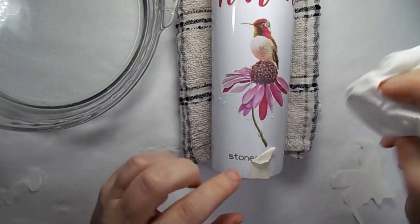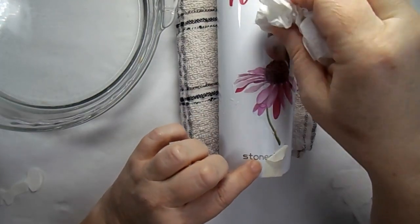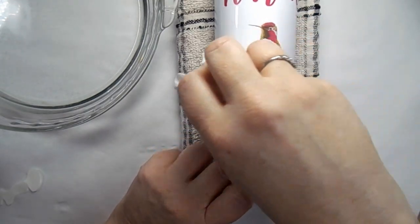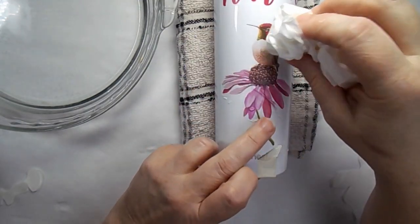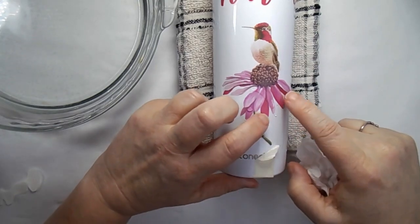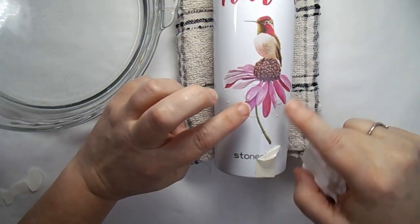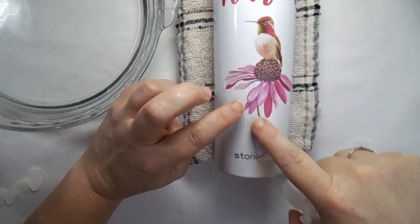I'm just going to peel that back and we're going to get this hummingbird in place. Keep kind of moving it around. You don't want too much film left. I cut around it nice and close so that it doesn't just look like a clear sticker sitting on top of it.